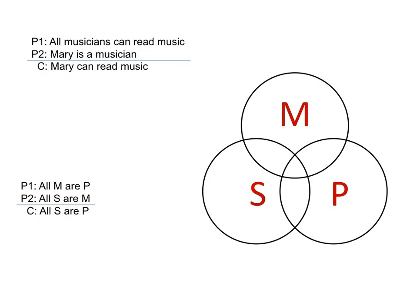The first thing we need to do in identifying whether or not a categorical argument is valid is we need to identify the terms involved in the argument. And we start with the conclusion. The terms of the conclusion will help us identify the terms in the premises.